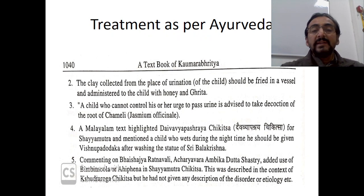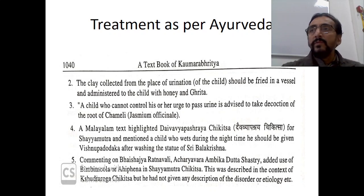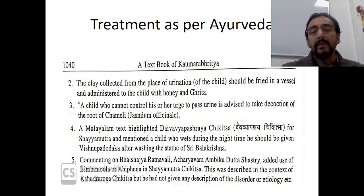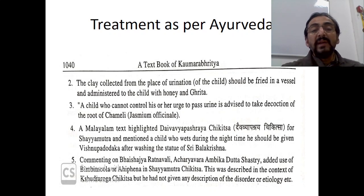Another treatment mentioned: clay collected from the place of urination should be fried in a vessel and administered to the child with honey and ghrita. This also cannot be practiced in present-day practice. A child who cannot control urination is also advised to take the decoction of the root of chameli or jasmine. This treatment has been mentioned.